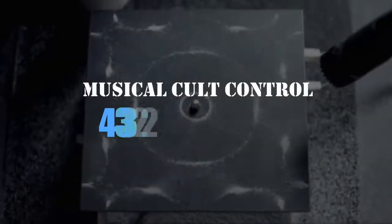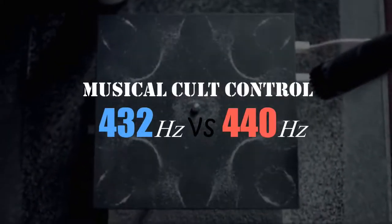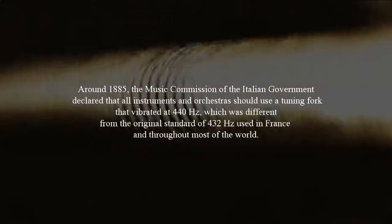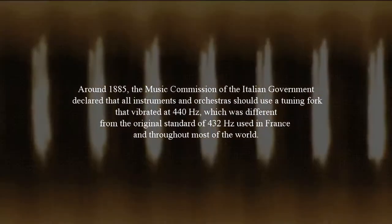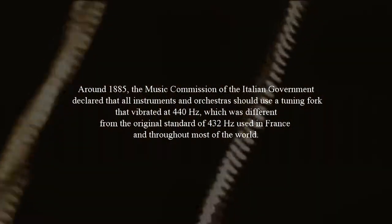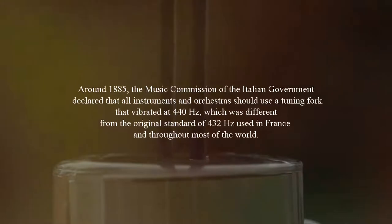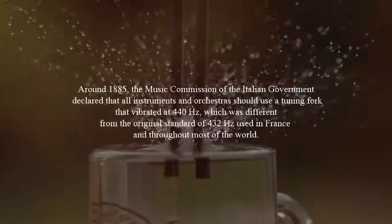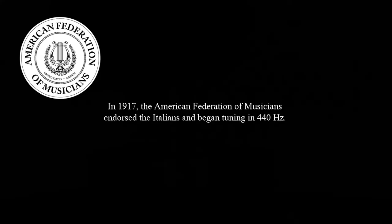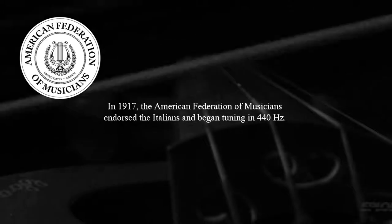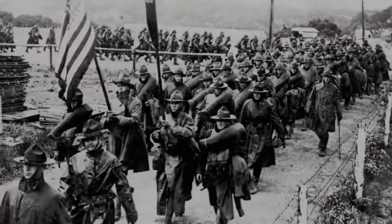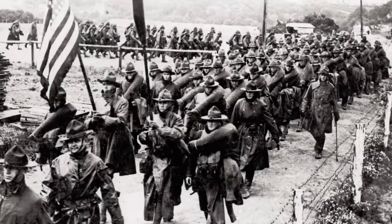Musical Cult Control: 432 Hz vs. 440 Hz. What I am about to tell you might change the way you listen to music forever. Around 1885, the Music Commission of the Italian government declared that all instruments and orchestras should use a tuning fork that vibrated at 440 Hz, which was different from the original standard of 432 Hz used in France and throughout most of the world. In 1917, the American Federation of Musicians endorsed the Italians and began tuning in 440 Hz. Interestingly, in 1917, the United States officially entered World War I.